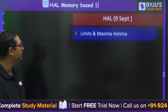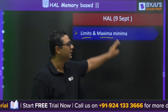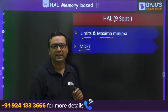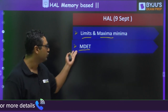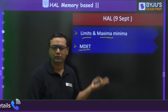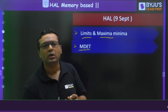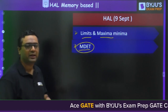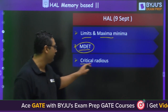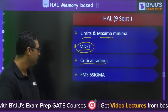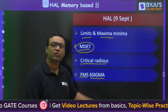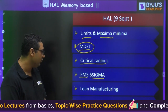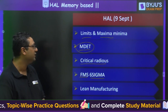There were questions on limits, maxima, and minima. The theory of failure — specifically the Maximum Distortion Energy (MDT) theory — was asked not as a numerical but conceptually, about hydrostatic stress from the MDT derivation. Critical radius from heat and mass transfer was also asked. From industrial topics: FMS, six sigma, static inventory model, profit-loss model, and lean manufacturing were covered.